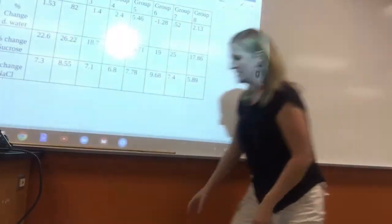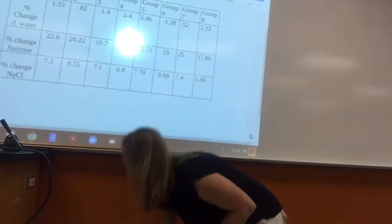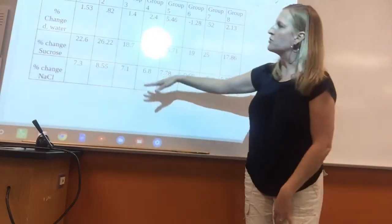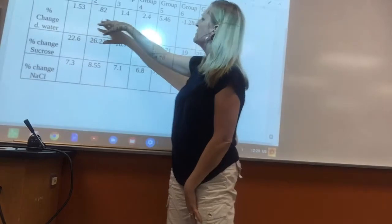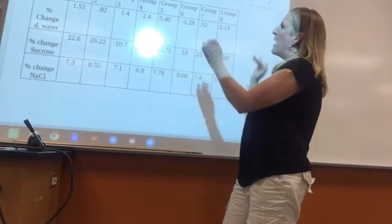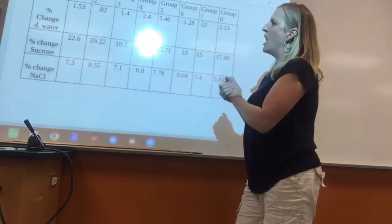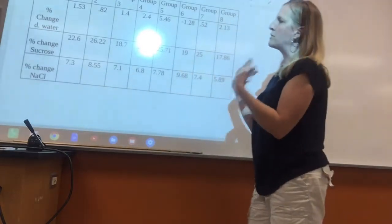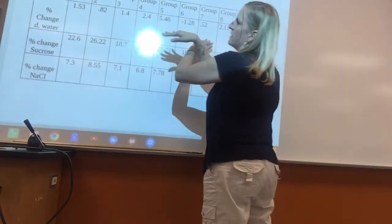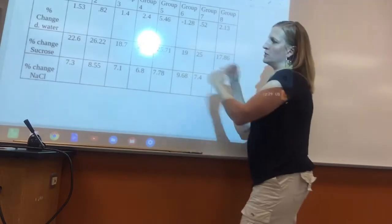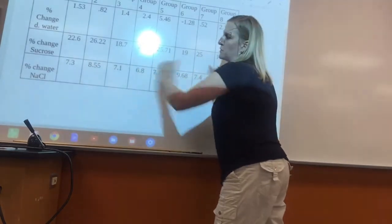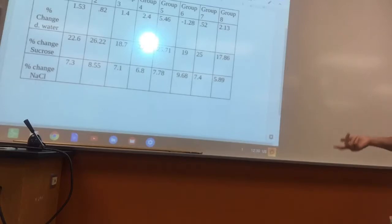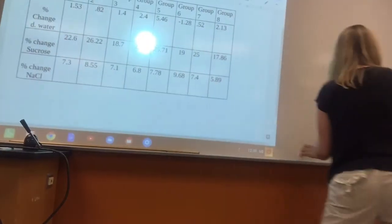I want to talk a little bit about this here. So we have all the different groups here, and you can see very similar numbers. There are a few outliers with the distilled water, sucrose, and sodium chloride, but you can see that the least amount of mass changes with the distilled water, most with sucrose, and then kind of intermediate with the sodium chloride. And I want to talk about why that is.